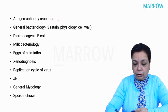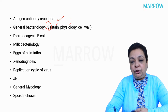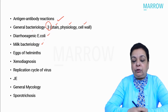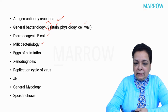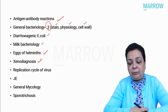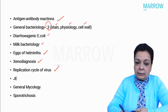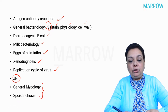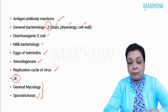Topics asked included antigen-antibody reactions, three questions from general bacteriology on staining, physiology, and cell wall structure. There was a question on diarrheogenic Escherichia coli, bacteriology of milk, an image-based question on helminth eggs, xenodiagnosis, virus replication cycle, Japanese encephalitis, and two questions on mycology — general mycology and sporotrichosis.